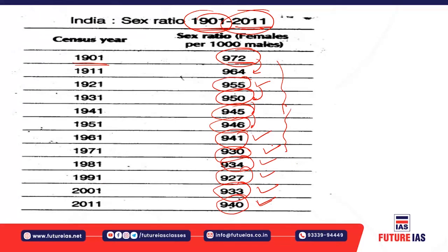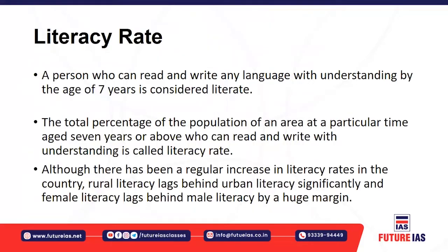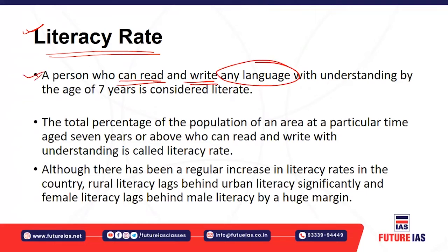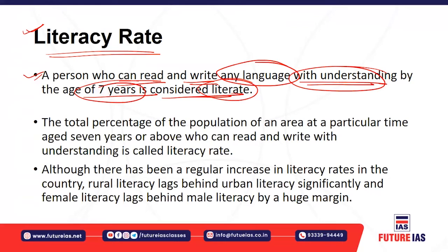Now let's understand the literacy rate. A person is considered literate if they can read and write any language with understanding, provided they are seven years of age or older. So when calculating the literacy rate, we consider the population aged seven years and above.